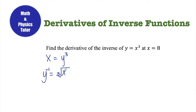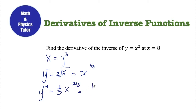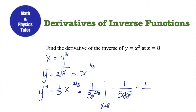If I want the derivative of this function at x equals 8, I can write this inverse function as x to the 1/3 and take a derivative. The derivative is 1/3 times x to the negative 2/3, which is the same as 1 over 3x to the positive 2/3. Evaluating at x equals 8: 1 over 3 times the cube root of 8 squared. The cube root of 8 is 2, squared is 4, times 3 gives 12. So the derivative of the inverse function at x equals 8 is 1 over 12.